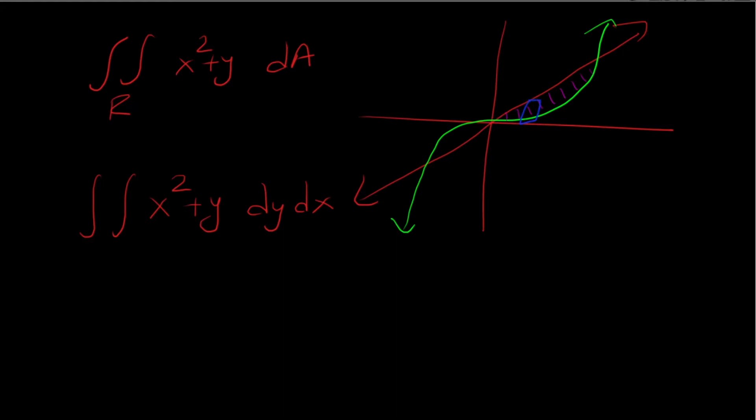The bottom part of the graph is y equals x cubed and the top is y equals x. They intersect at 0 comma 0 and then here at 1 comma 1.